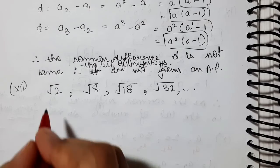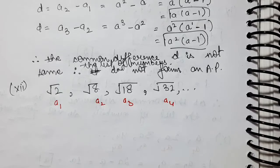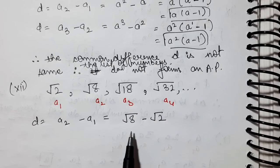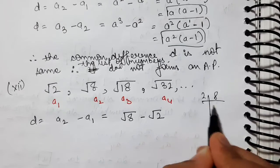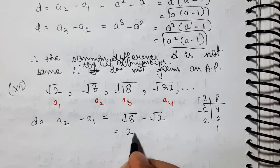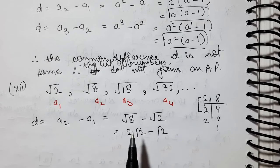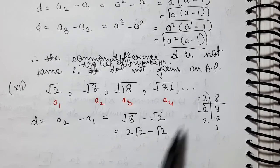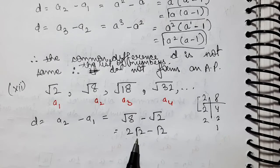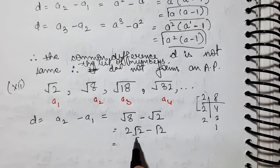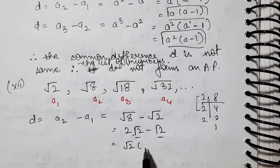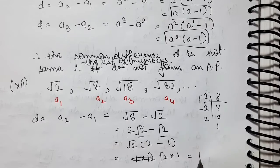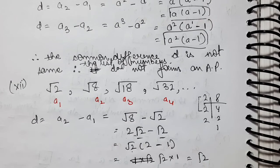First, mark the terms: first, second, third, fourth. We find D = A2 minus A1 = √8 minus √2. Using prime factorization, √8 = √(2×2×2) = 2√2. So 2√2 minus √2. Taking √2 as common: (2 minus 1)√2 = √2. So in the first case, D = √2.